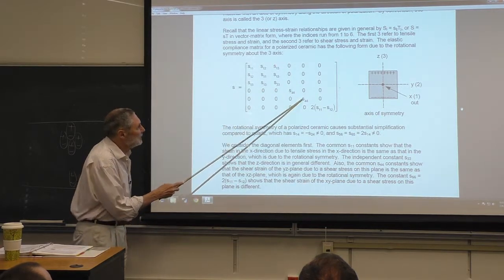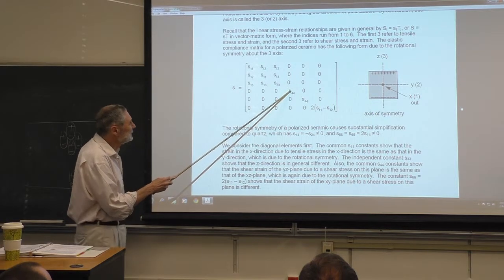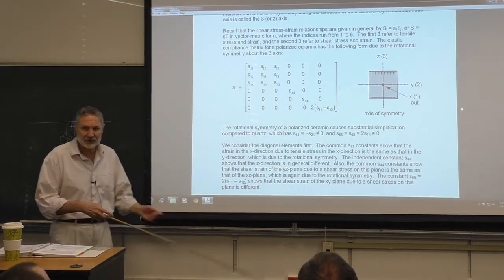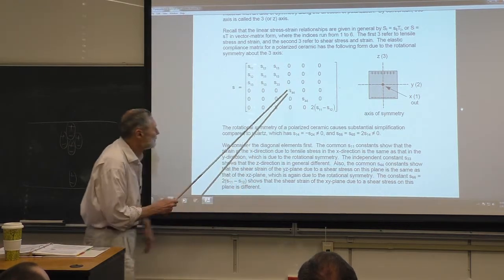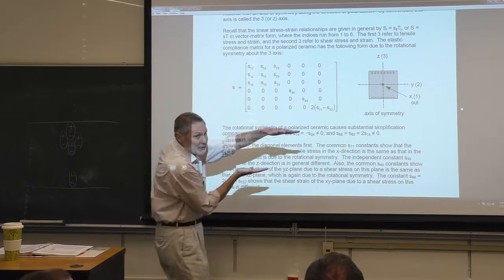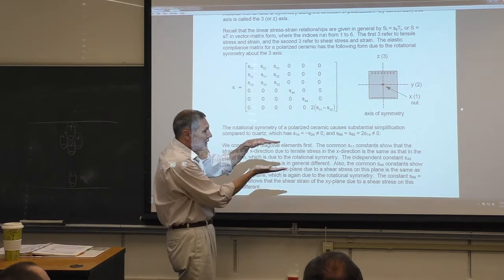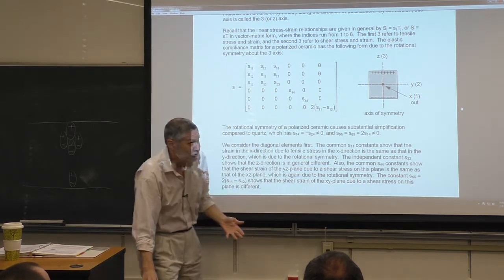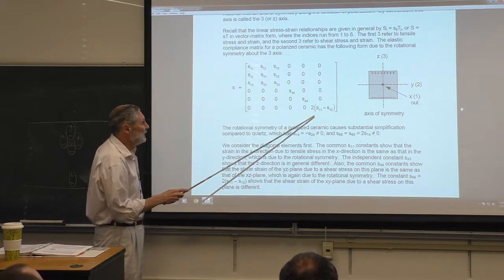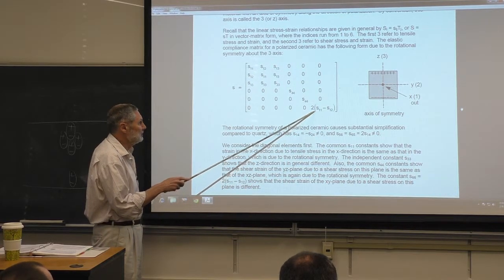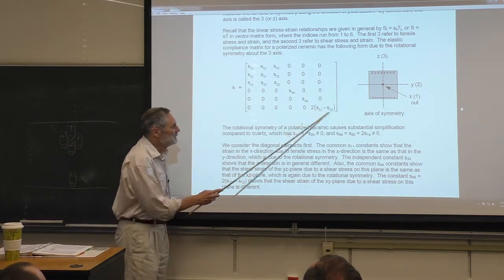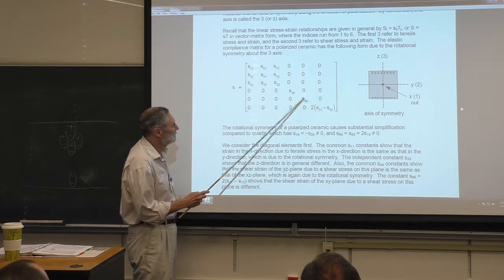Continuing along the diagonal: these two shear values are the same. This corresponds to shear — index 4 corresponds to the yz plane, i.e., the x axis. If I subject this to a shear stress in the x direction and then the same stress in another direction, it strains the same amount because of rotational symmetry. In general S₆₆ is different from these two — it's given by this relation — and in general it's different from the other two diagonal shear elements.